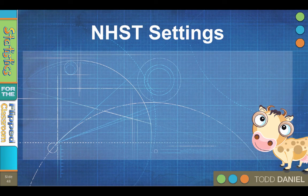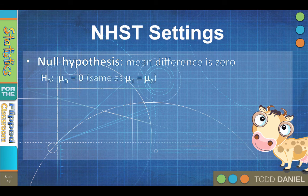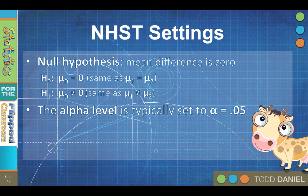Here are the settings for null hypothesis significance testing. The null hypothesis is that the mean difference between the groups is 0, which implies that the means of the two groups are equal. More accurately, because the sample is drawn from a single population, if there is no treatment effect, then the difference between the before and after measurements will average out to 0. The null hypothesis is written as H₀: mu sub d equals 0, which is the same as mu₁ equals mu₂. The alternative hypothesis is H₁: mu sub d does not equal 0, which is the same as mu₁ does not equal mu₂. The alpha level is typically set to 0.05, but could be set to 0.01 or any other level chosen by the researcher.